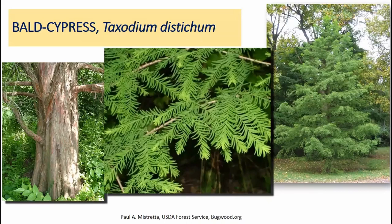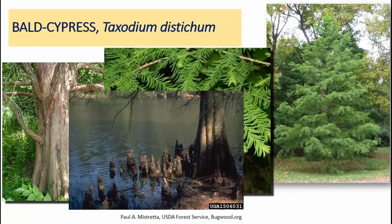We have a couple of deciduous conifers in Indiana. Bald cypress is in the redwood family, native to southwestern Indiana but planted across the state. It has very unusual, almost fern-like soft foliage — the whole structure is the needle — which turns a rusty golden brown and falls off in autumn. When growing in saturated soils or standing water, it produces distinctive projections called knees or knobs above the root system.